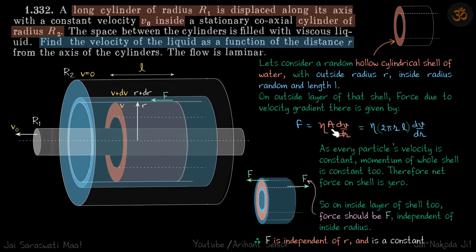In the problem, we have a long cylinder of radius r1 displaced along its axis with a constant velocity v₀. It is inside a stationary coaxial cylinder of radius r2. The space between this stationary cylinder and the moving cylinder is filled with viscous liquid.